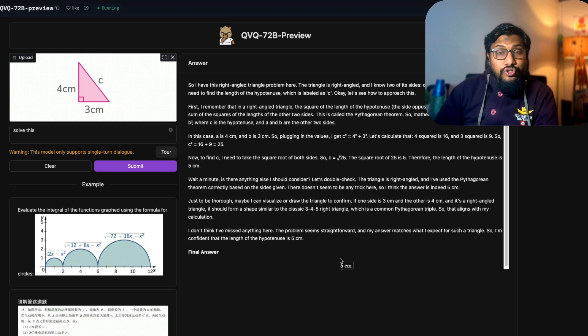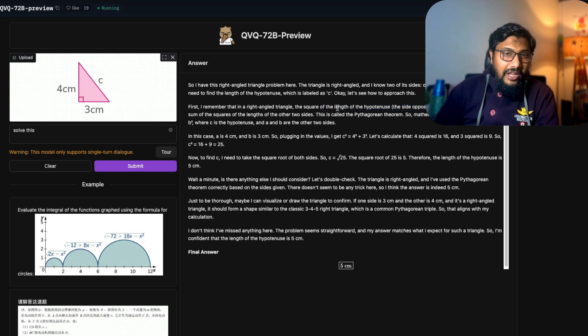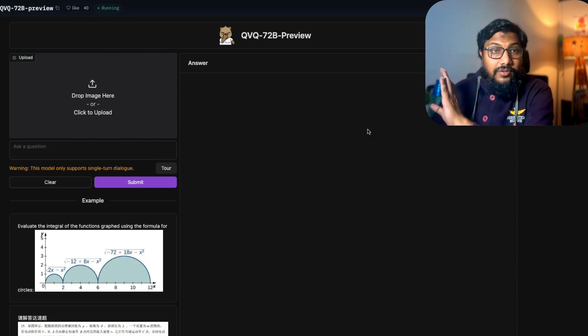It does a pretty good job of explaining what is the problem here. I've got this right angle triangle problem, and it says I've got to use Pythagoras theorem. Yeah, this is called the Pythagoras theorem. Then it says the square length of hypotenuse and it gives a pretty detailed explanation. This is pretty good.